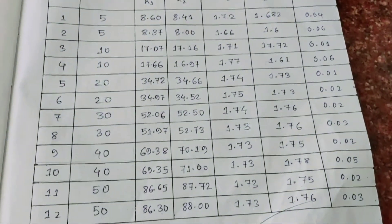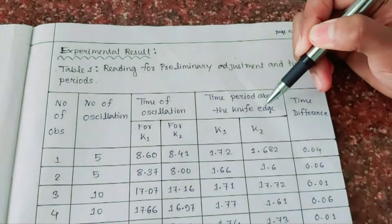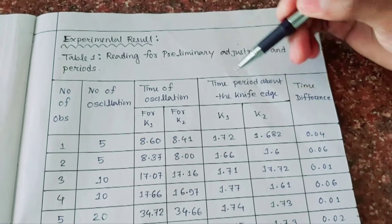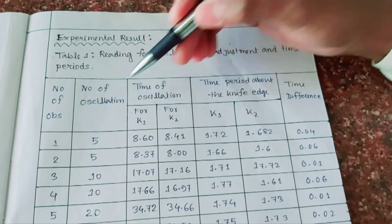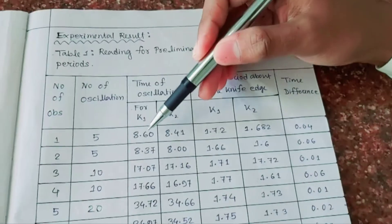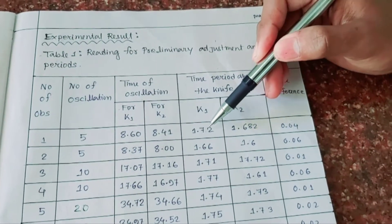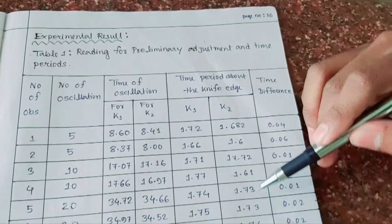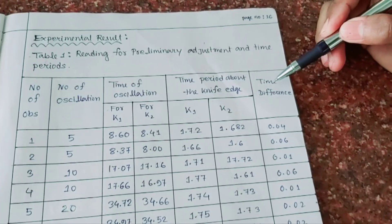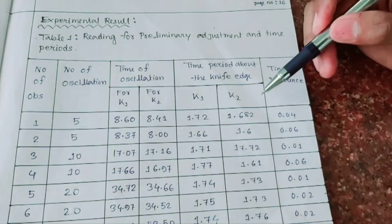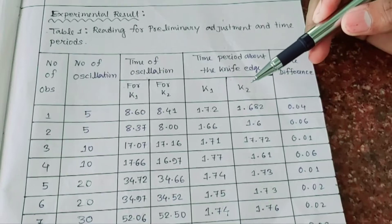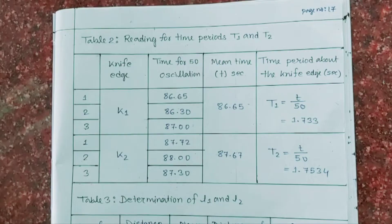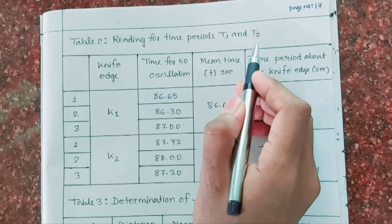After that, we find the time period about each knife edge for K1 and K2. The formula for time period is: time of oscillations divided by number of oscillations. Dividing gives us the time period values. We also find the time difference, which is the subtraction of the lower time period from the larger one. This gives us the readings for time periods T1 and T2.